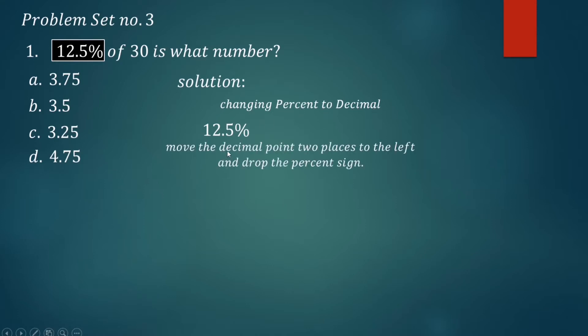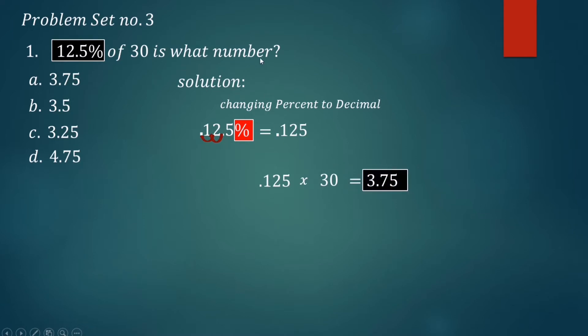Here's the rule: move the decimal point two places to the left - one, two - then drop the percent sign. So the equivalent here is 0.125. The operation to be used here is multiplication, so the word 'of' refers to multiplication. 0.125 times 30 equals 3.75. That is the result of 12.5% of 30, so the answer is A: 3.75.